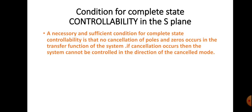That is Kalman's test for controllability. Additionally, in the s-plane, when given a transfer function, the necessary and sufficient condition for complete state controllability is that no cancellation of poles and zeros occurs in the transfer function of the system. If cancellation occurs, the system cannot be controlled in the direction of the cancelled mode.